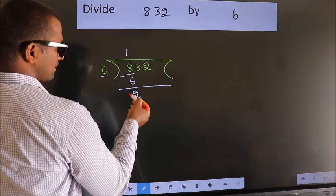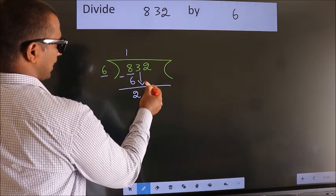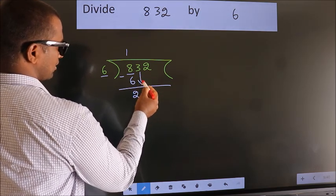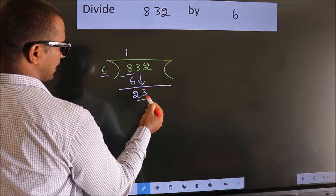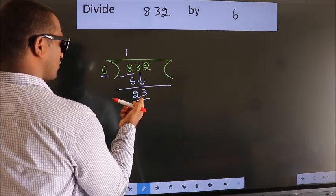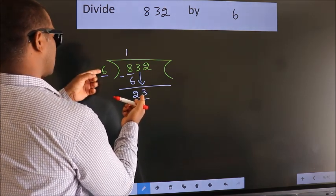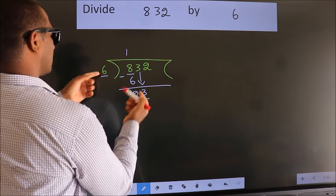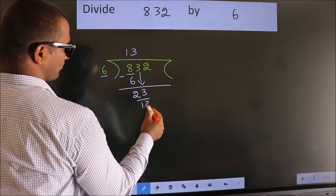After this, bring down the beside number. So, 3 down. So we have 23. A number close to 23 in the 6 table is 6 threes 18.